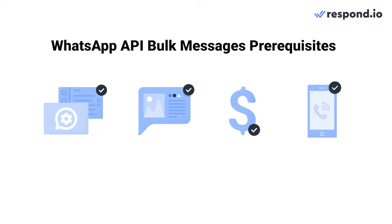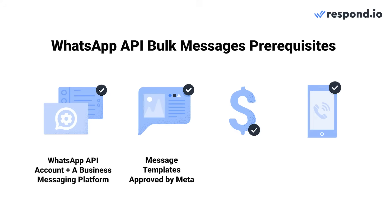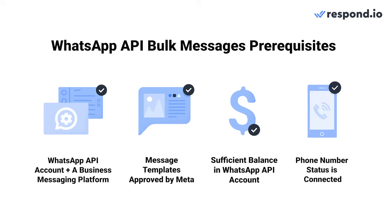To begin sending bulk messages on WhatsApp API, here's what you need. One: a WhatsApp API account connected to Respond.io. Two: meta-approved WhatsApp message templates. Three: sufficient balance in your WhatsApp API account to pay for WhatsApp conversation charges. And four: a phone number with connected status and a good quality rating to send bulk messages without restrictions.